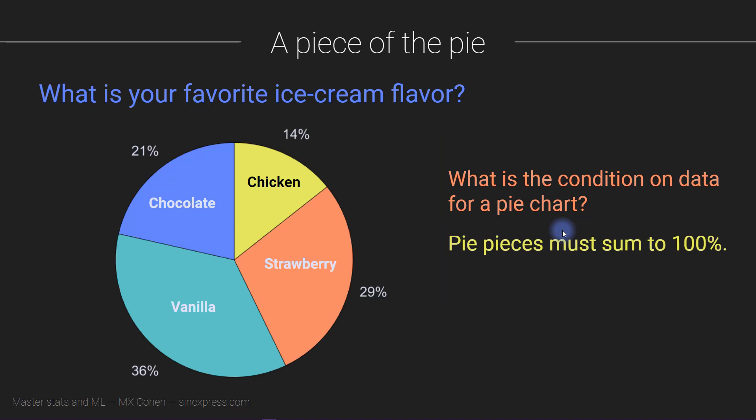The last visualization method I want to introduce is called a pie chart. You can see why it's called a pie chart. This is used for categorical data but there is a condition on the data. Pie charts cannot be used for any type of data. They can only be used for data that sum up to 100 percent. If your data do not sum up to 100 percent then you cannot use a pie chart.